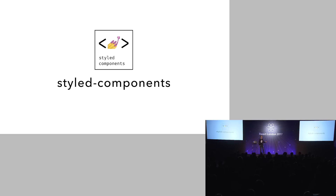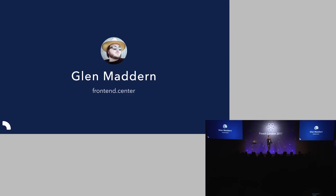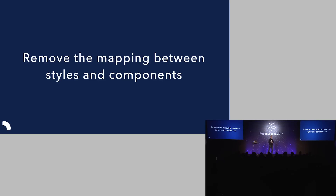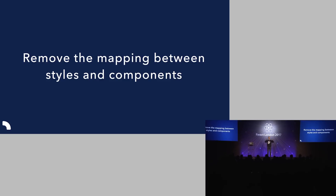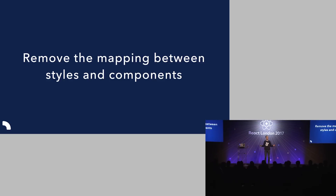Styled Components is made by Glen Madden and myself. Glen is one of the co-creators of CSS Modules. We sat down in Australia and thought about styling in component-based systems further and came up with what is now Styled Components. The key idea is that it removes the mapping between styles and components — if you only ever use every class name once, why do you have a class name at all? A class name is a mapping between a piece of CSS and an HTML DOM node, but if you only use that mapping once, why have a mapping at all?